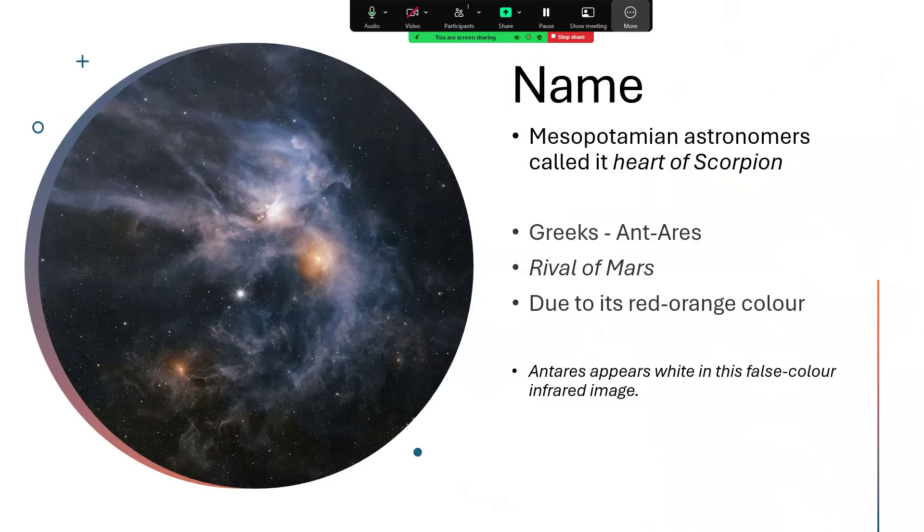Mesopotamian astronomers called it the heart of the scorpion, which makes sense, the brightest star in the constellation of Scorpius. And the Greeks called it Antares, the rival of Mars. And this is due to its red-orange color.